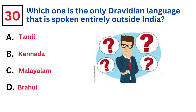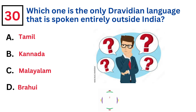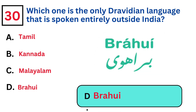Which one is the only Dravidian language that is spoken entirely outside India? Answer: Brahui.